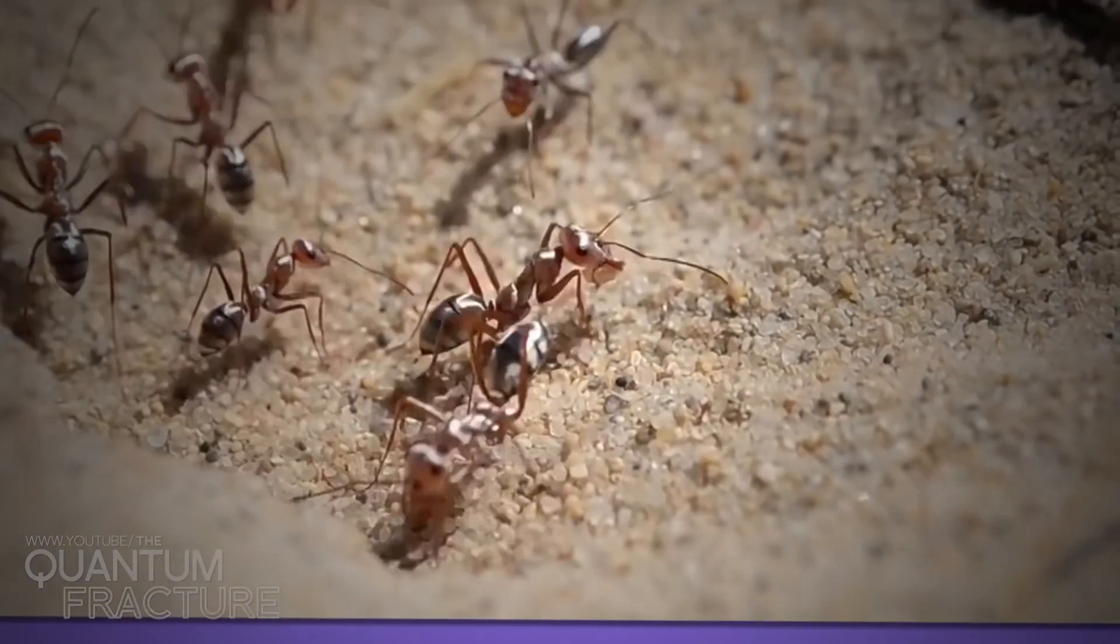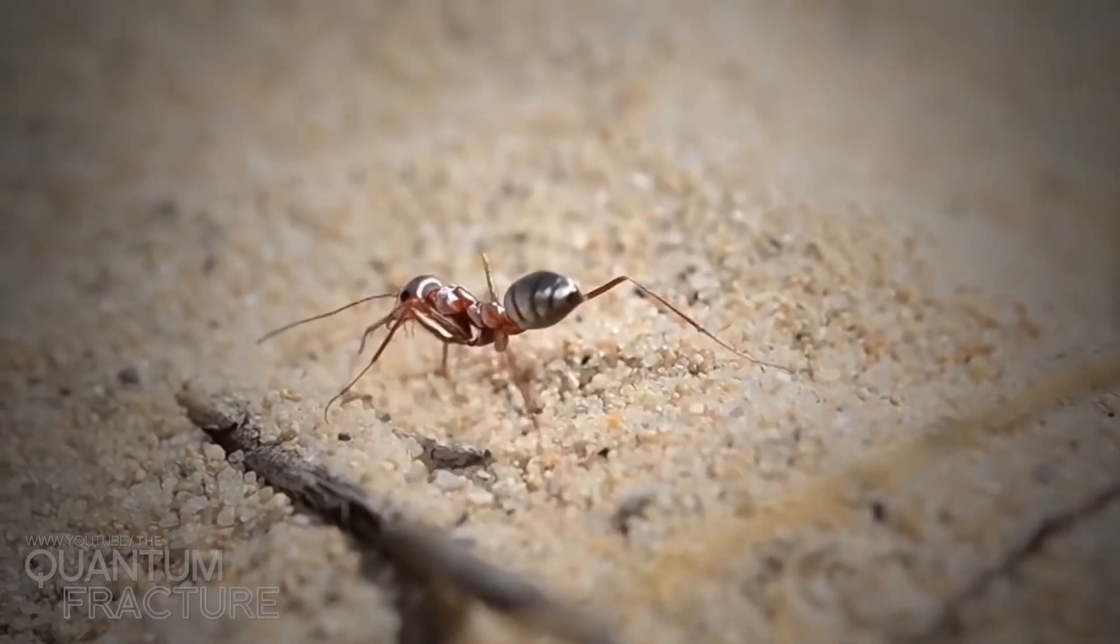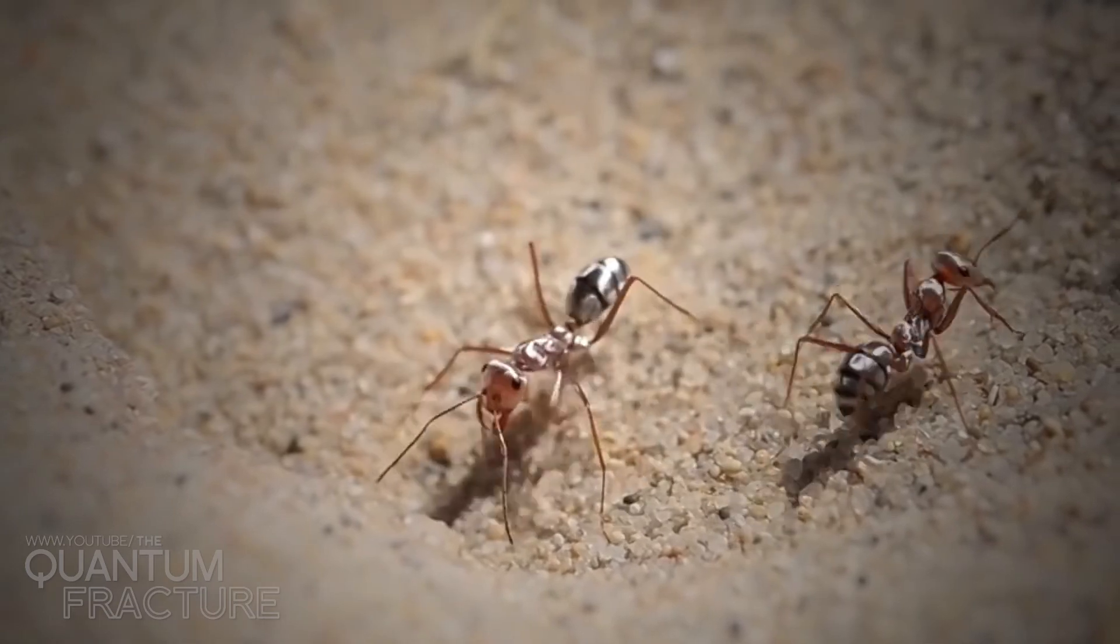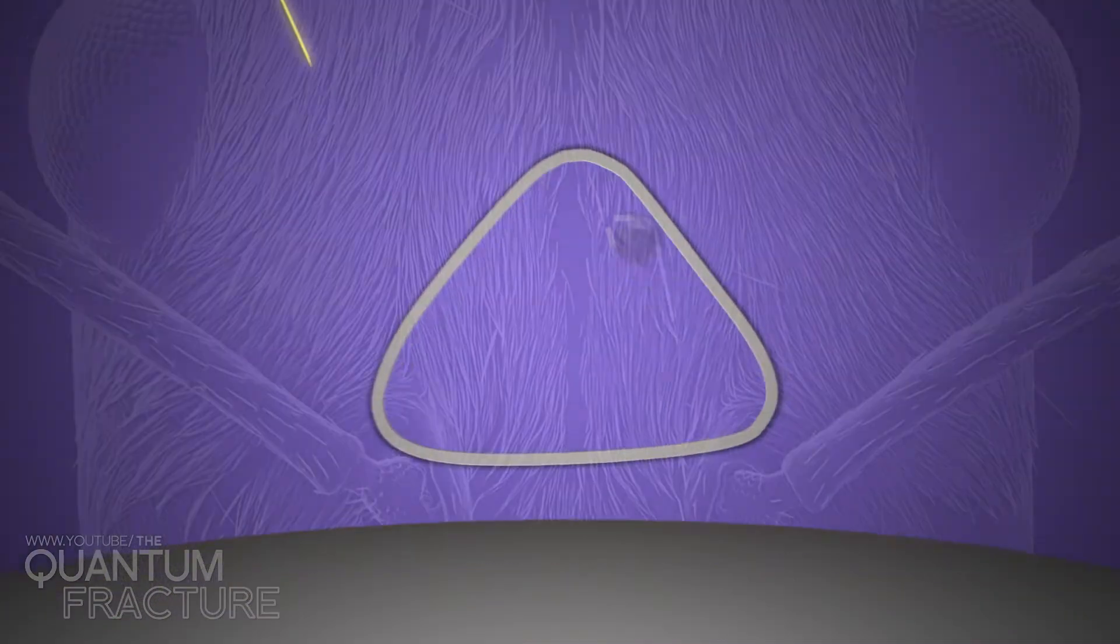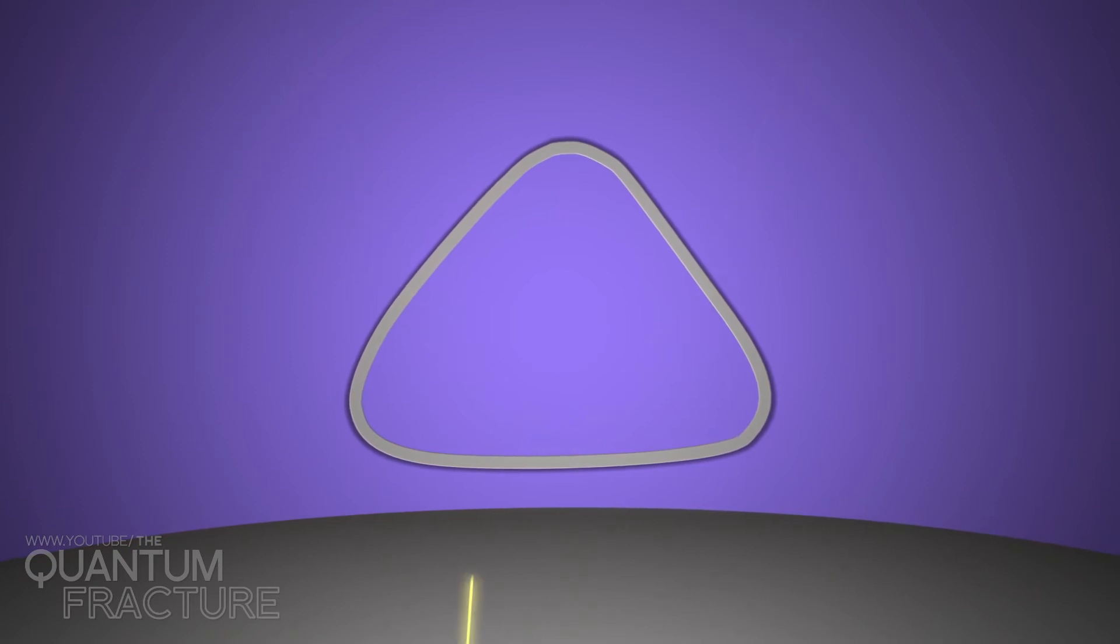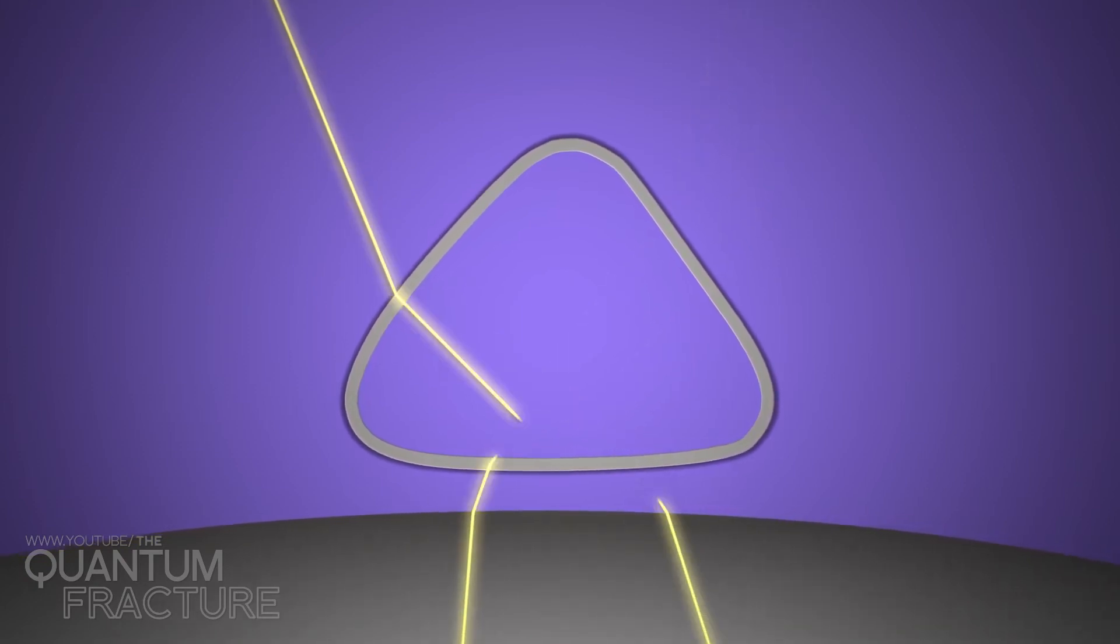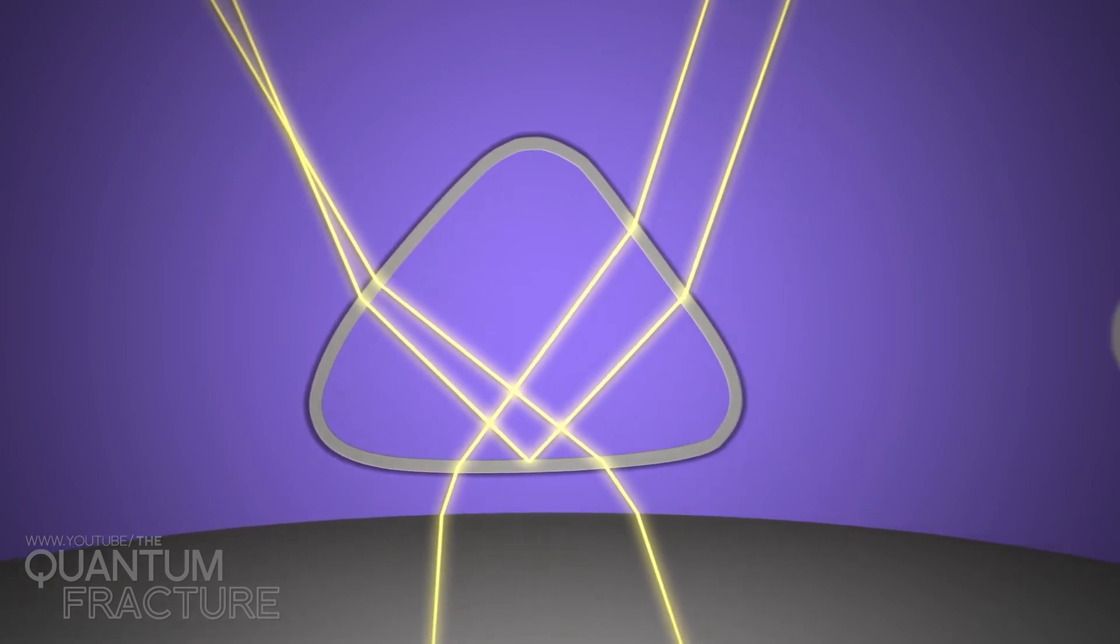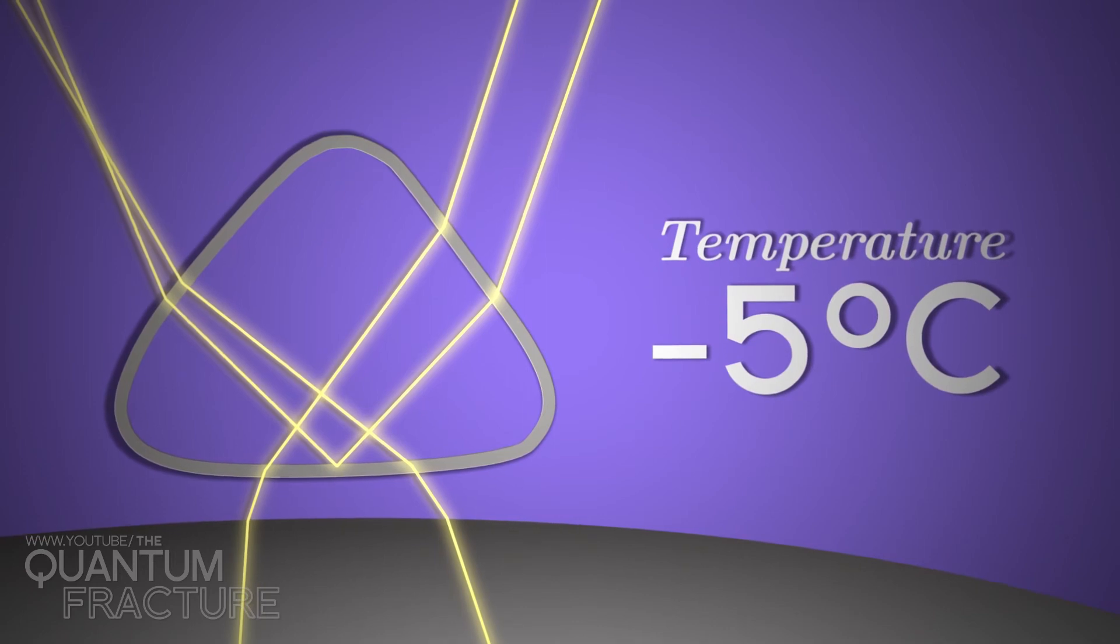However, this is nothing new on our planet. Saharan silver ants have been using a similar technique on their skin for hundreds of thousands of years. Tiny hairs with triangular cross sections help reflect a large amount of sunlight while also letting them cool off by radiating waves in this part of the spectrum. As contradictory as it might sound, those hairs keep the ants about 5 degrees cooler than they should be.